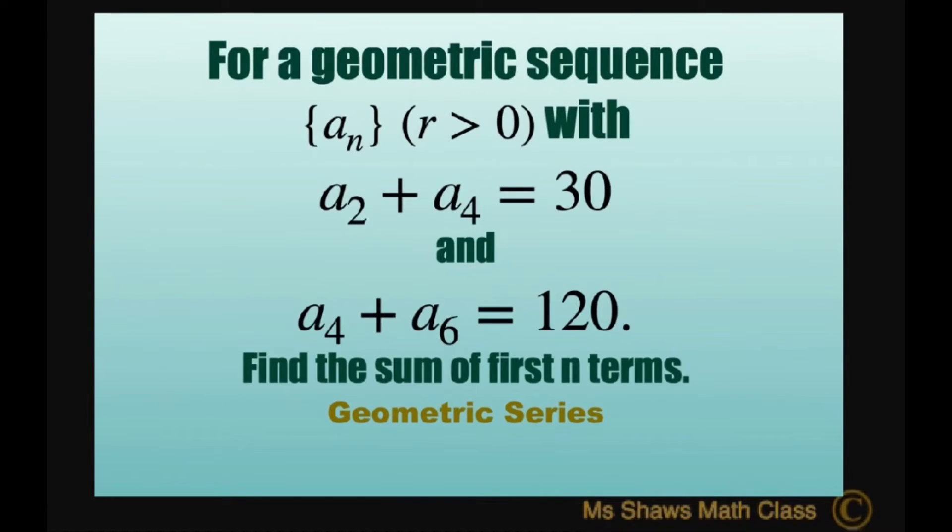For a geometric sequence with R as positive, we have the second term plus the fourth term equals 30. The fourth term plus the sixth term equals 120. And we're going to find the sum of the first n terms.